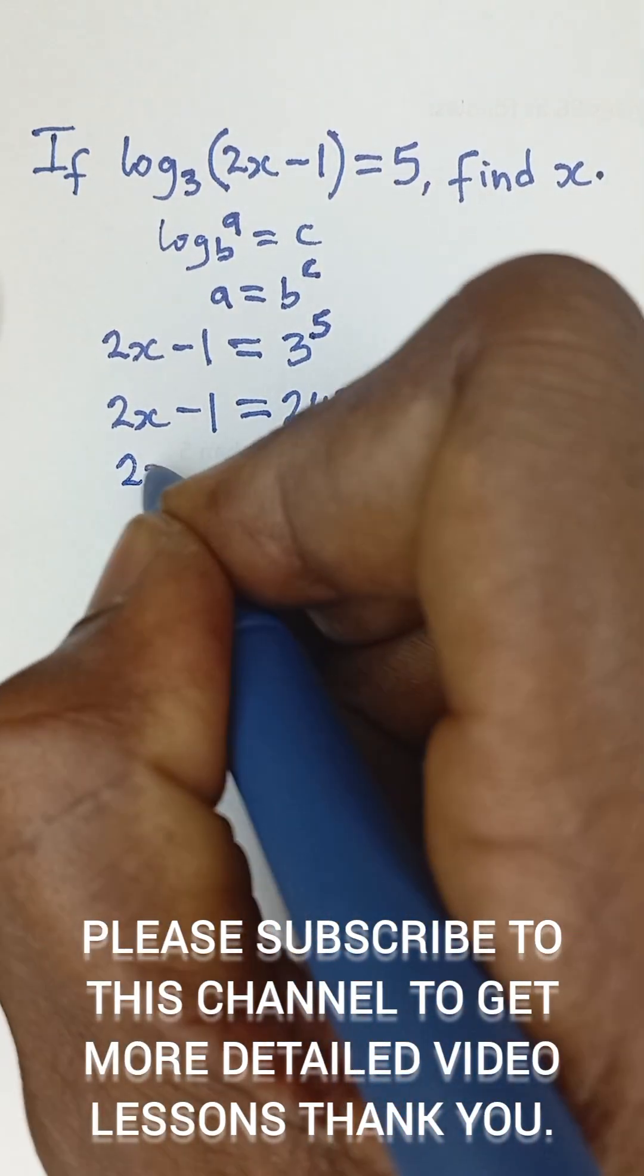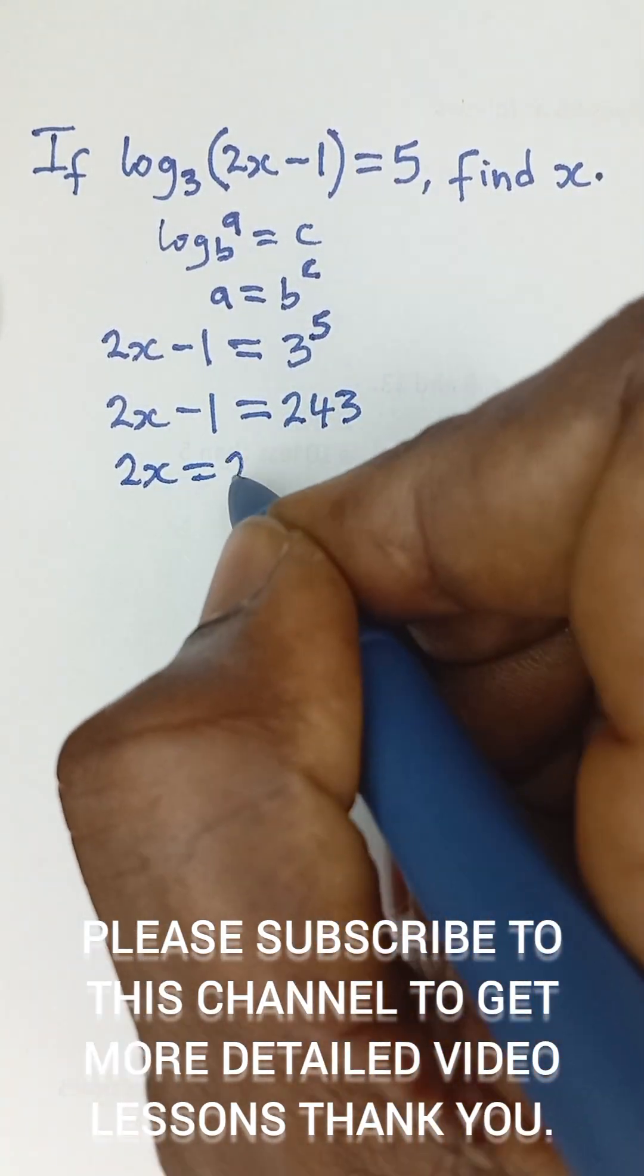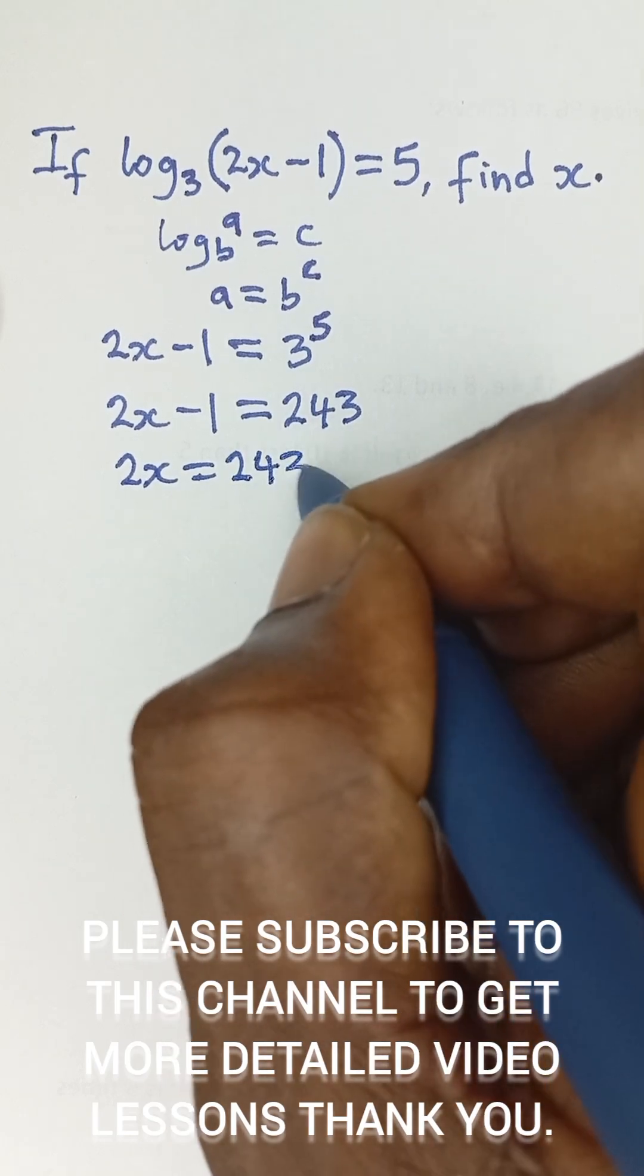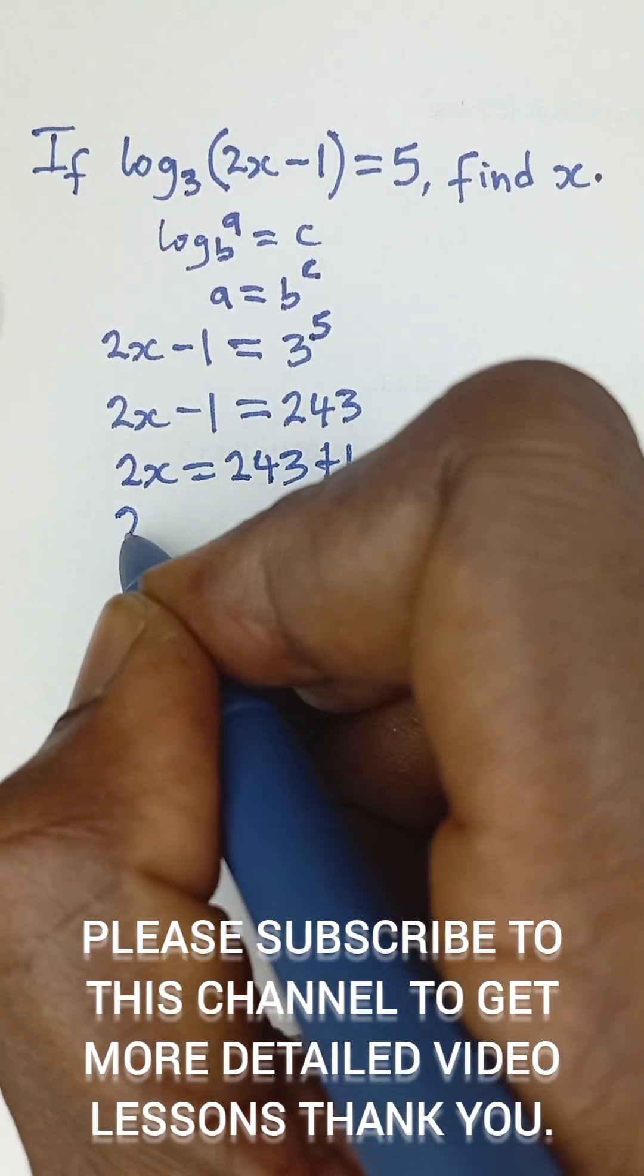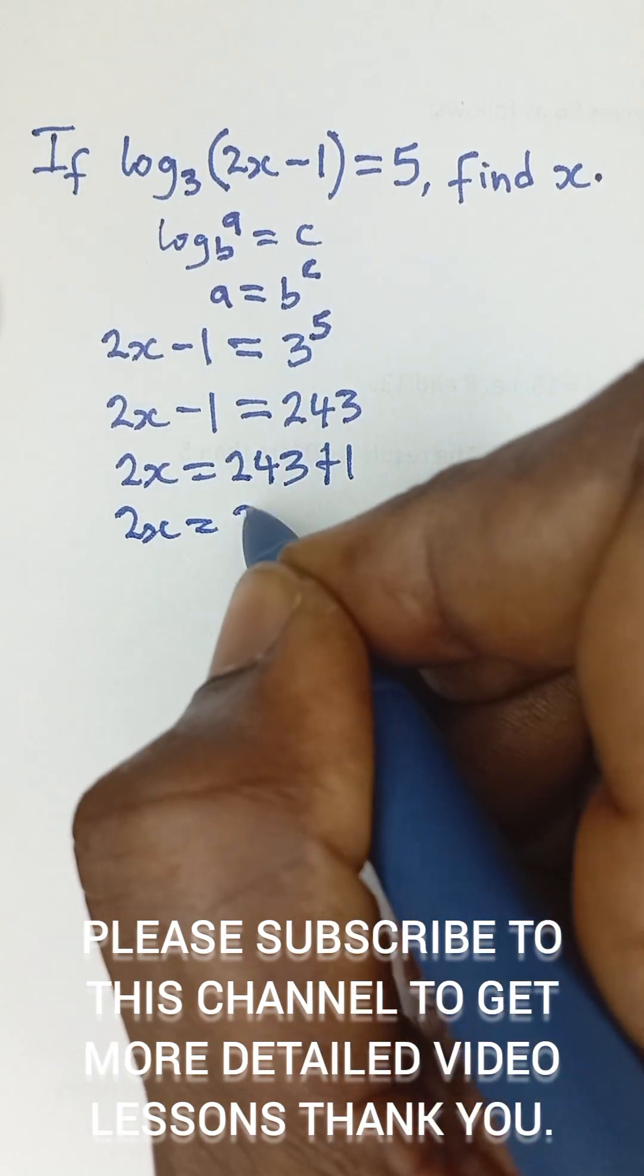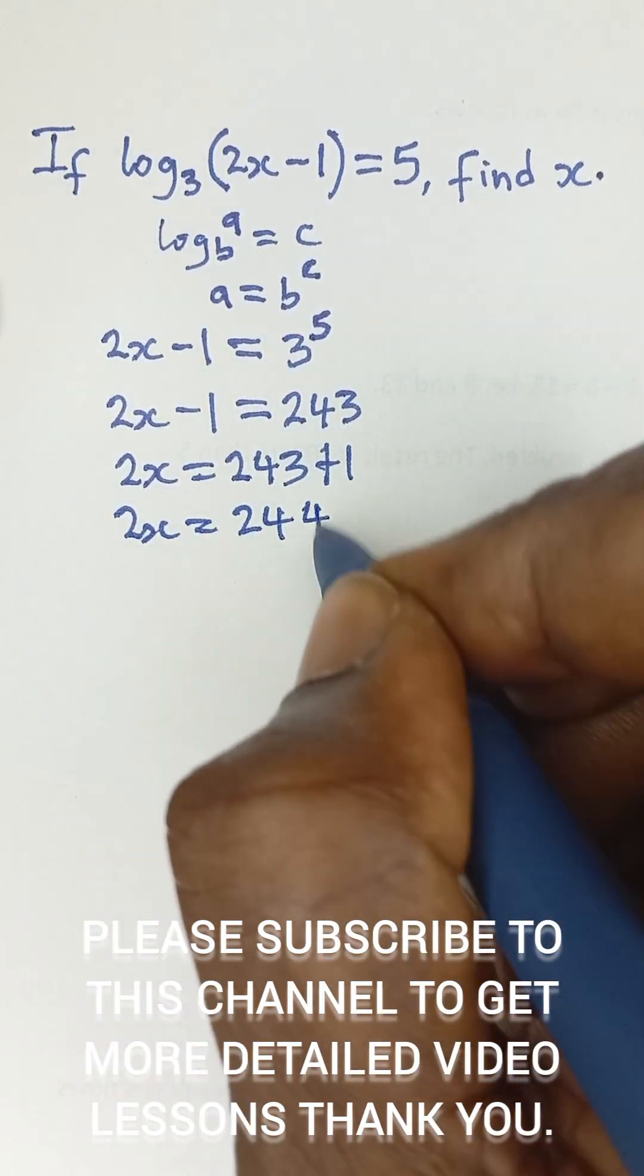And then we have 2x is equal to 243. This one comes to this side, it becomes positive 1. So that gives us 2x is equal to 244.